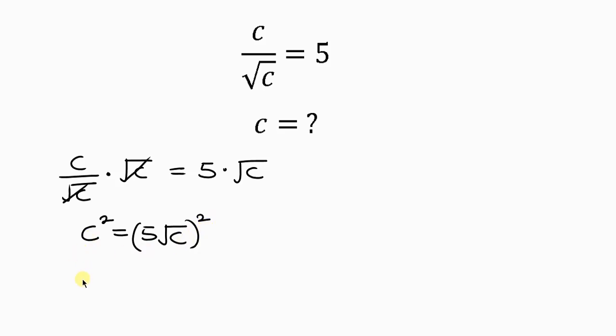So this becomes C squared equal to this expression, which is the same as 5 raised to the power 2 times the square root of C raised to the power 2. Now, simplifying further, we have C squared to be equal to, 5 squared is 25.